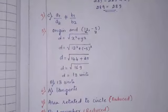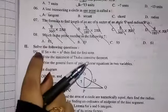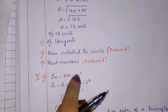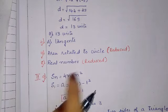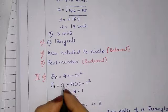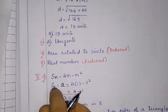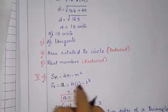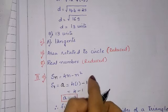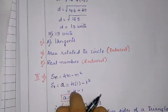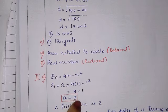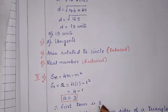Question number 9: if Sn = 4n − n², find the first term. The first term is always S1. Substituting n = 1: S1 = 4(1) − (1)² = 4 − 1 = 3. Therefore the first term is 3.